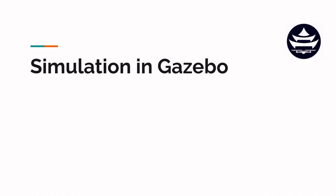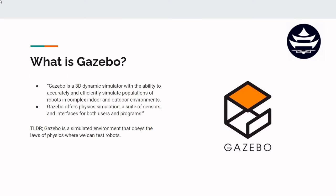In this video we're going to get into a little bit of simulation and Gazebo. What is Gazebo? Here's a by-the-book definition: Gazebo is a 3D dynamic simulator with the ability to accurately and efficiently simulate populations of robots in complex indoor and outdoor environments.